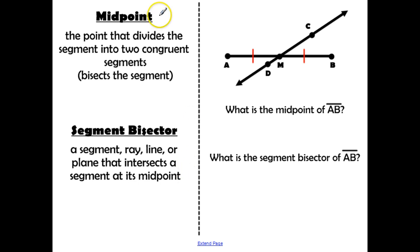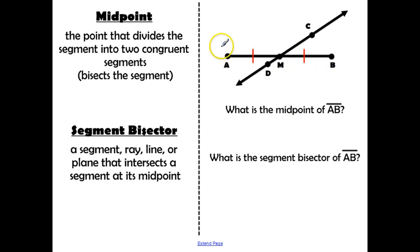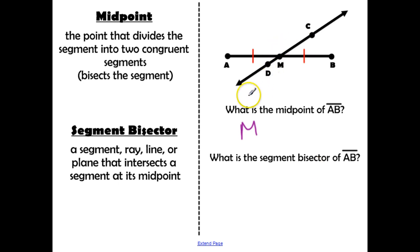The midpoint is the point exactly in the middle; the segment bisector is the geometric figure that divides the segment at the midpoint. On segment AB, from A to M is one tick mark and M to B is one tick mark, so point M is the midpoint. The geometric figure that cuts it in half is line CD, which is the segment bisector.